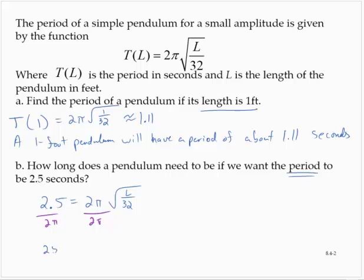So that would give me 2.5 over 2π is equal to the square root of L over 32. Remove the square root of L over 32.